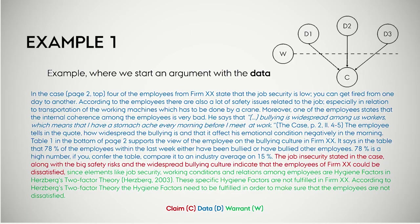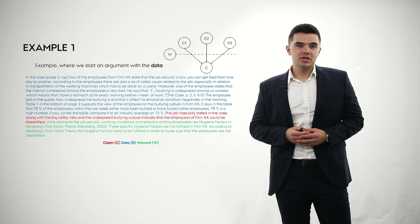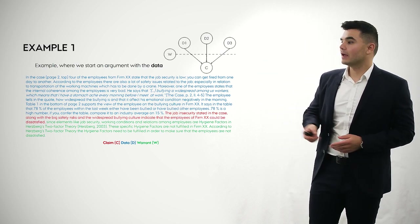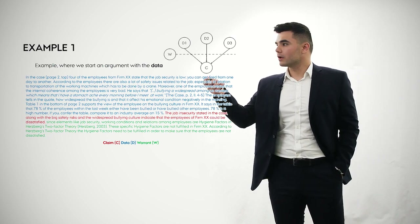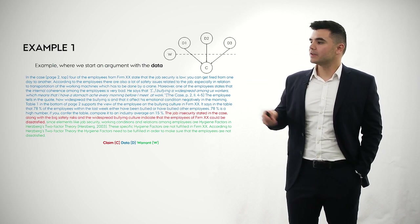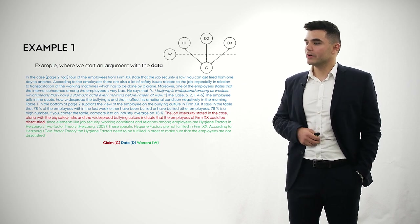We have now looked at the theory behind arguments and argumentation. I will now introduce some examples where arguments are used — good examples. The first example is structured so that the data part comes first. I strongly encourage you to pause the video and read this argument in detail. The data part is colored in blue, the claim in red, and the warrant in green.